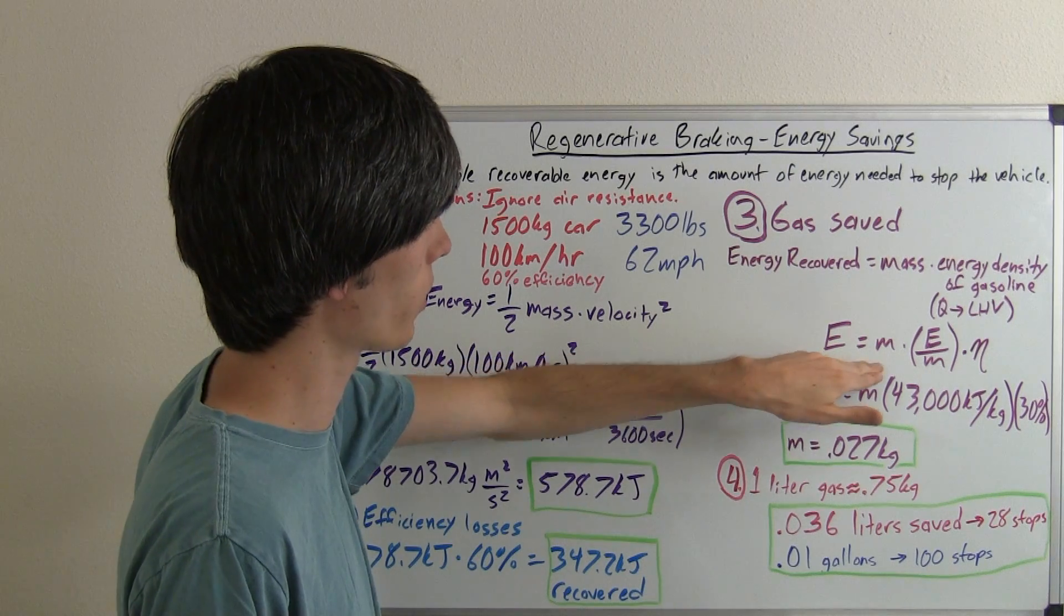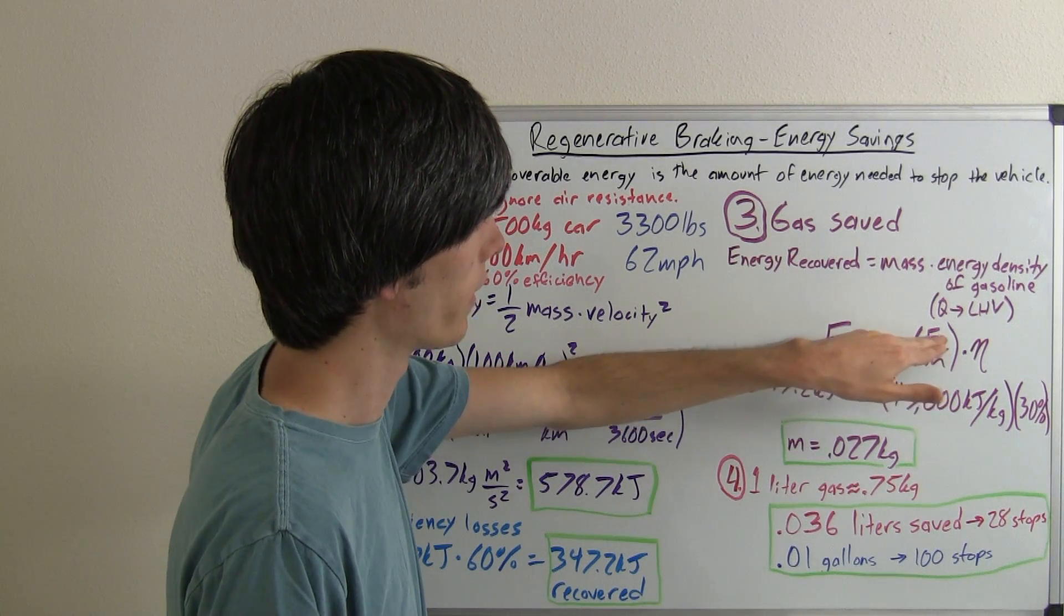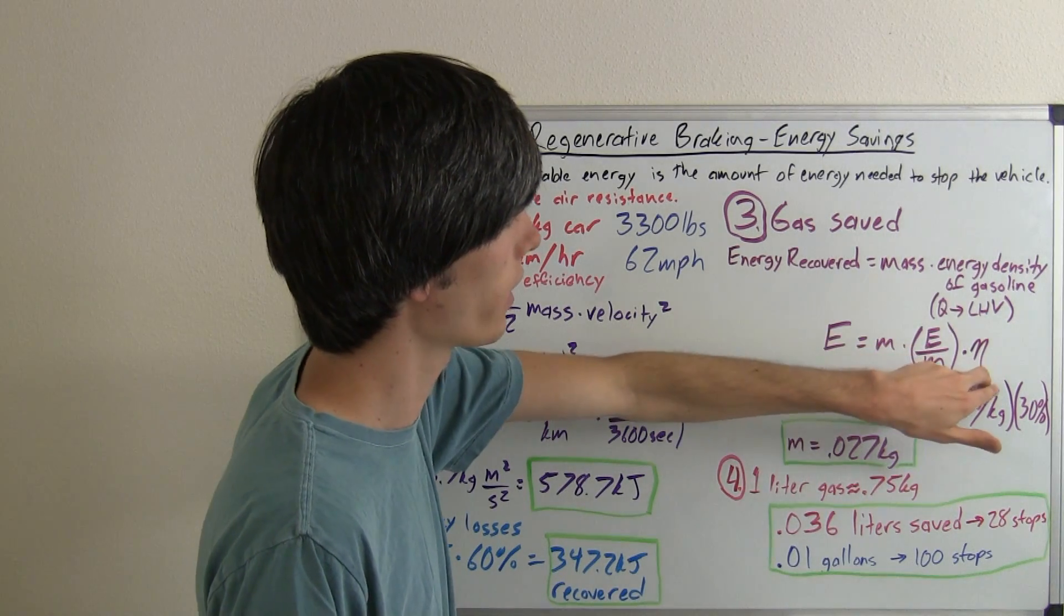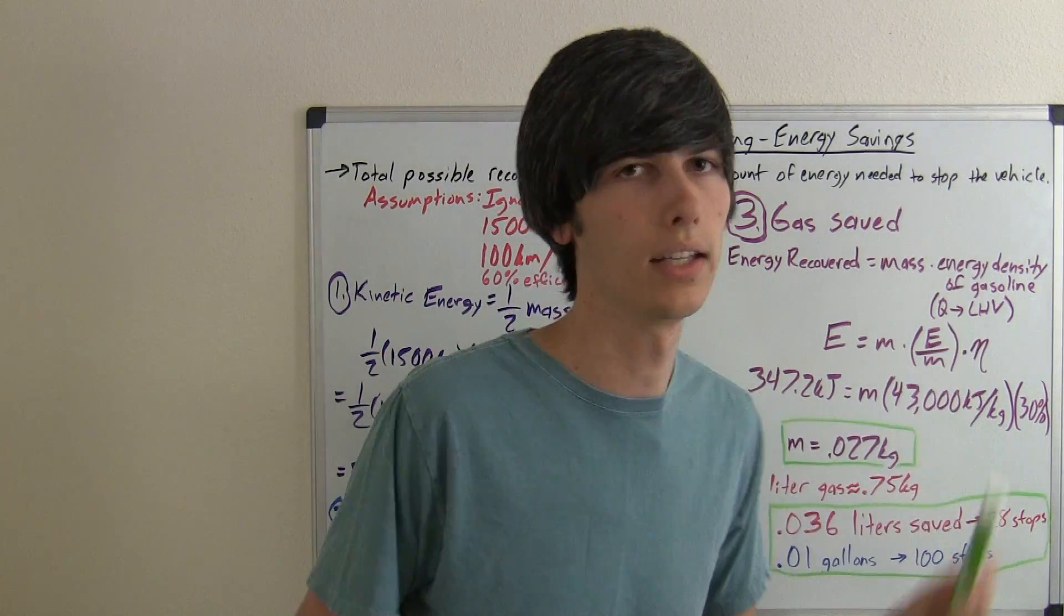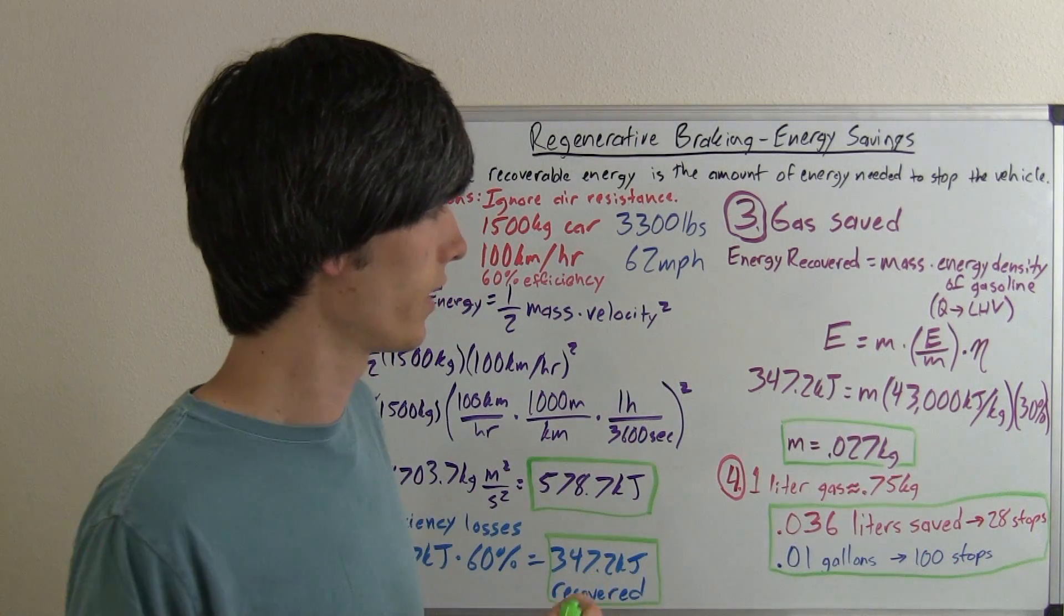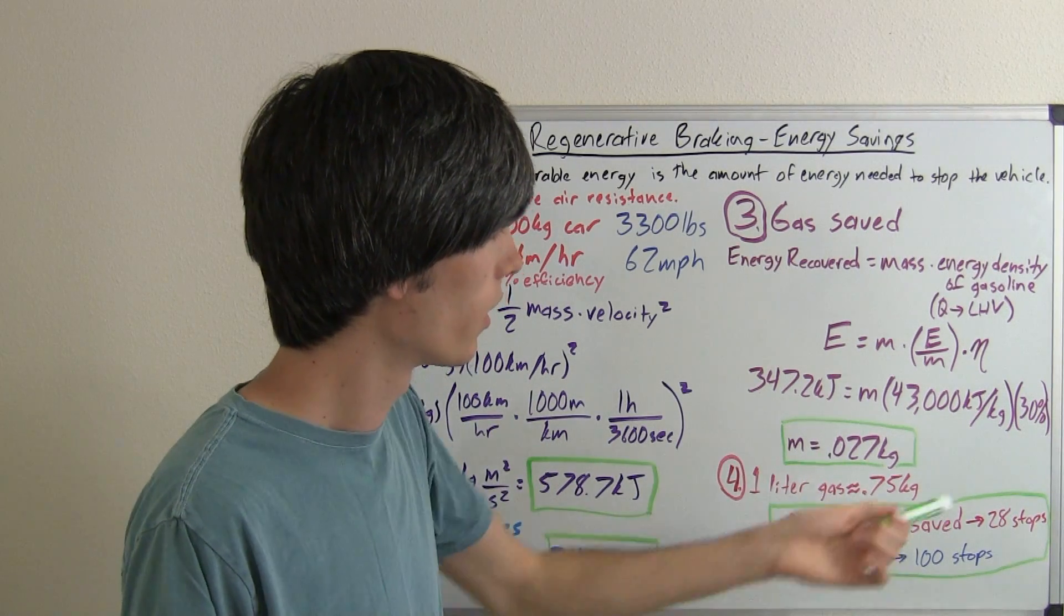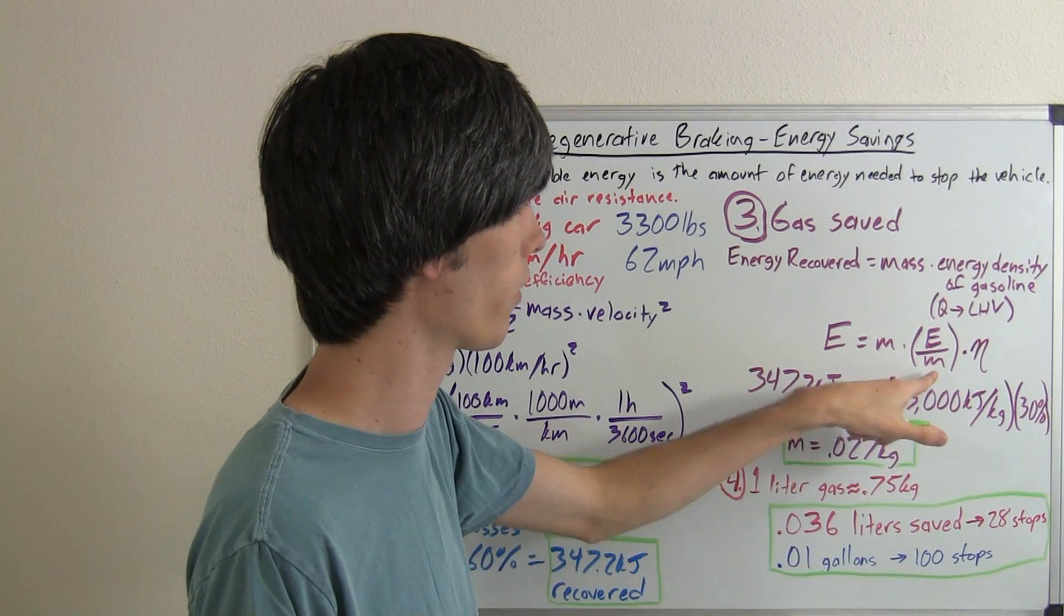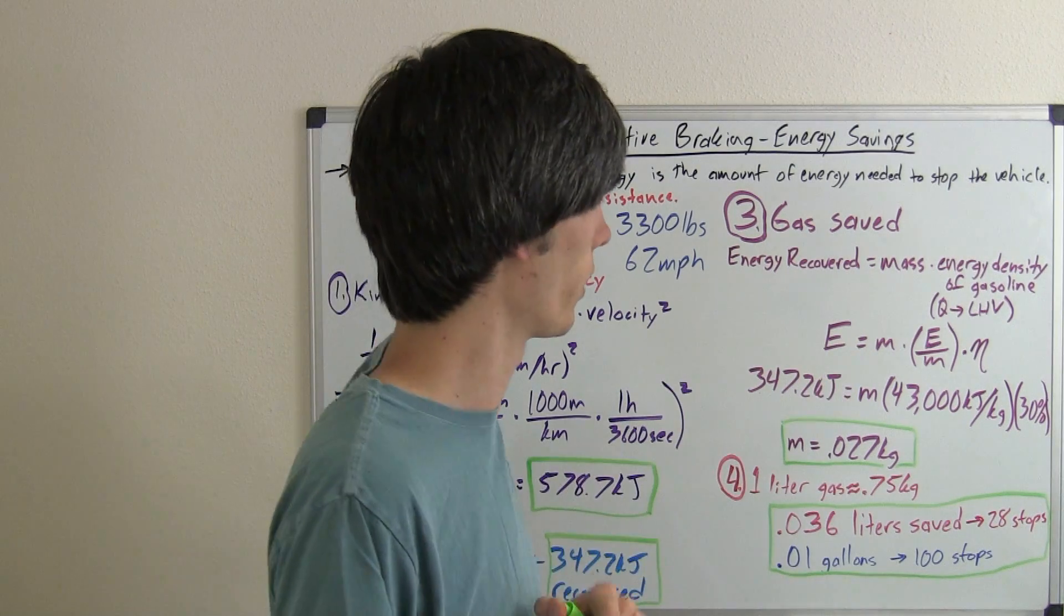So let's check our equation here, make sure it makes sense. Energy recovered equals mass times the energy over the mass, that's the density of gasoline. And then I've added in the efficiency here of our system. So if you've got an ICE engine that's burning gasoline, they don't operate anywhere near 100% efficiency, more like 30%.